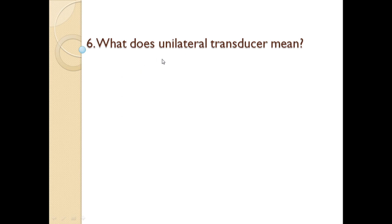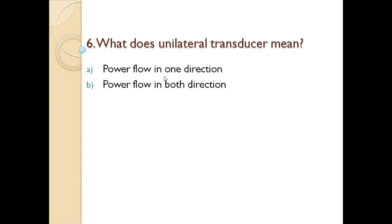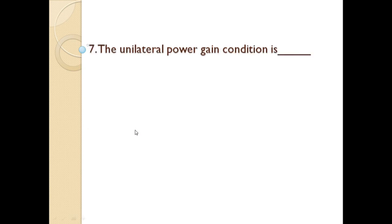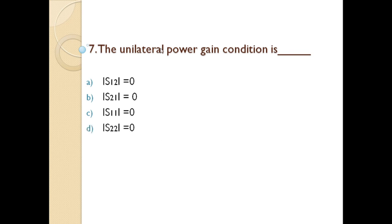Question 6: What does unilateral transducer mean? Options are: power flow in one direction, power flow in both directions, no power flow, or infinite power flow. The answer is power flow in one direction. Question 7: The unilateral power gain condition is — option A: |S12| = 0; option B: |S21| = 0; option C: |S11| = 0; option D: |S22| = 0. For unilateral (one direction), the answer is |S12| = 0.